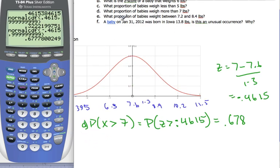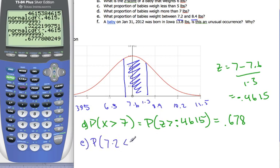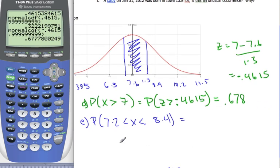I'm going to E part. We're looking for proportions between 7.2 and 8.4. Looking at my sketch, that's roughly here to here. And I'm looking for this area in between here. And so, the probability is of 7.2 less than x less than 8.4. Now, in order to do that, I'm going to find my z-scores for both of these.